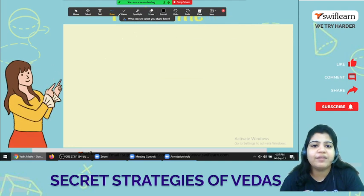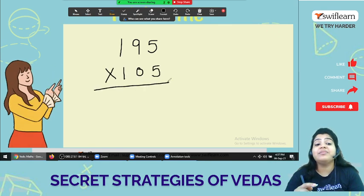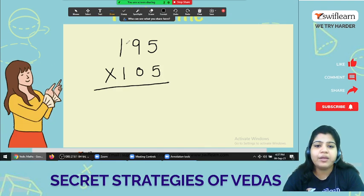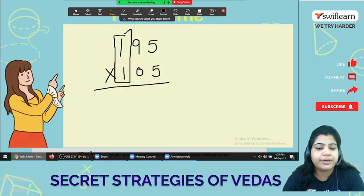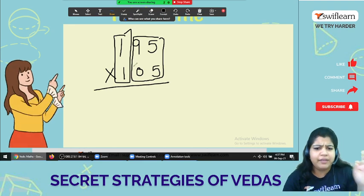Let's take one more example. Suppose I'll take 195 times 105. So this time the sum is 100. Starting are identical and the last digit sum 100. 95 plus 5 is 100. How we are going to do this one?